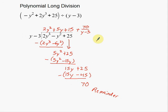To recap: if you know how to do long division, you know how to do this. Please use parentheses when subtracting — that's the number one mistake students make. Remember, subtracting negative 6y² gives positive 5y², not negative 7y². And if you get a remainder, express it as a fraction over the divisor — in this case, 70 over y minus 3. That is polynomial long division. Thanks for watching, see you next time.